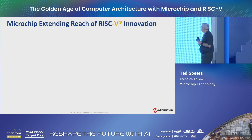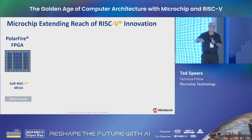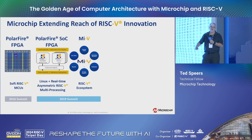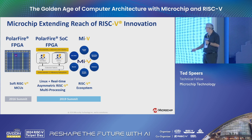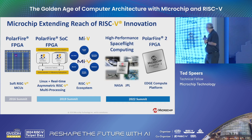Switching now to Microchip extending the reach of RISC-V. At the 2016 RISC-V Summit we introduced a soft IP RISC-V core — programmable IP that runs in an FPGA. In 2019 we announced a SoC FPGA product called PolarFire SoC, which is a quad-core RISC-V application processor with a monitor core attached to our low-power, secure PolarFire FPGA. We have an ecosystem called Mi-V — our RISC-V ecosystem. We're one of the first companies to make products that users can actually program. In 2022 we announced PolarFire 2 with RISC-V enabled.